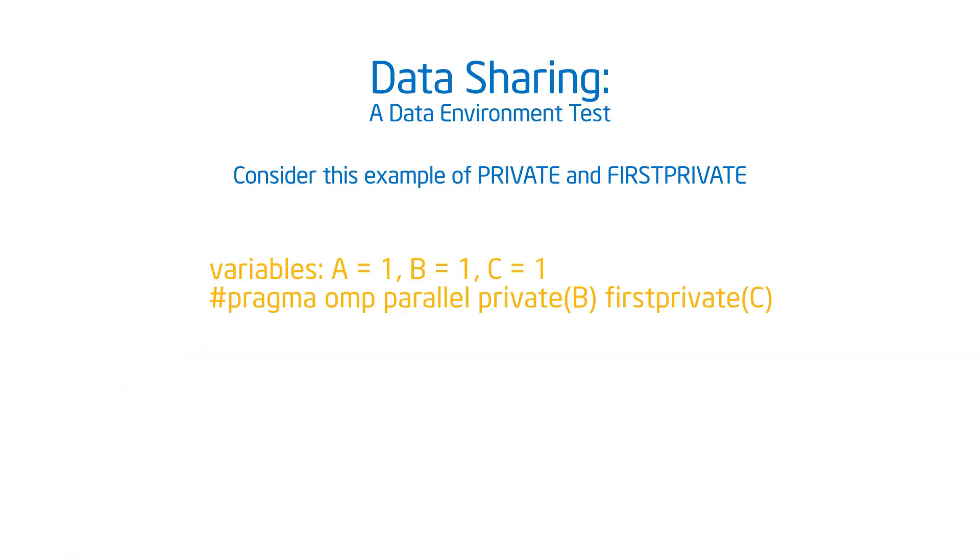One detail: it confuses the compiler if I have the same variable appear in multiple clauses — for example, shared X and private X, the compiler doesn't know what to do. Not allowed. But it does make sense that I might have first private and last private together. That's the only case where I can have multiple clauses on one variable — I can declare something both first private and last private.